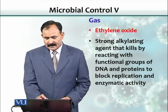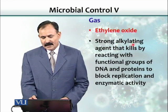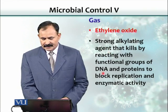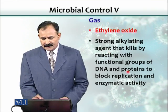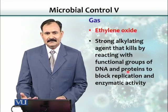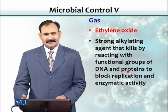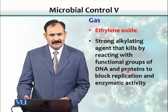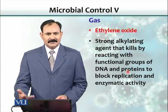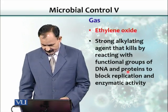Ethylene oxide is a very strong alkylating agent — it basically binds DNA and proteins. When something binds to DNA and proteins, the DNA is not able to replicate, which results in mutations and the bacteria would die and not be able to replicate.